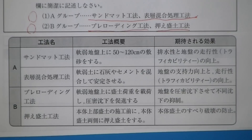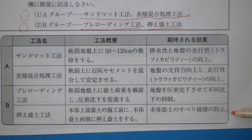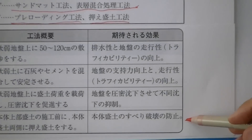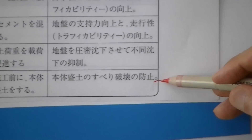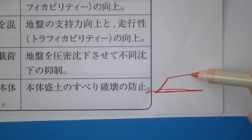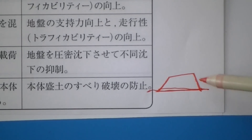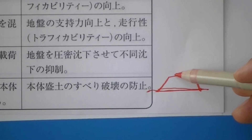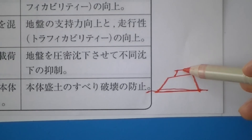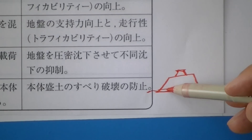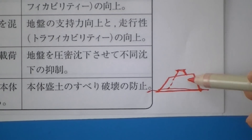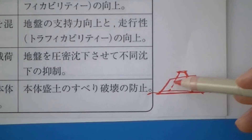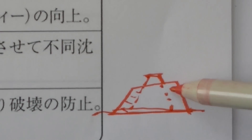本体の上部盛土と同時に施工して一体となって両側を抑え、土の滑り破壊を防止します。施工時には、こういう地盤があって盛る時にこういう盛り方をして、その上に盛っていく。この部分が正式な盛土で、この部分が抑えモリドになっている。